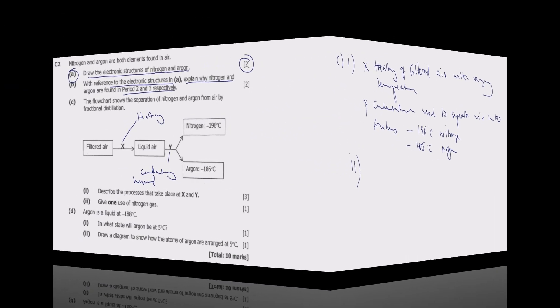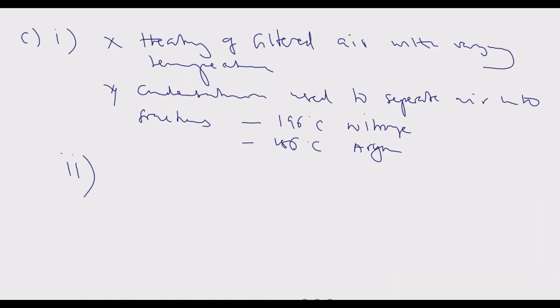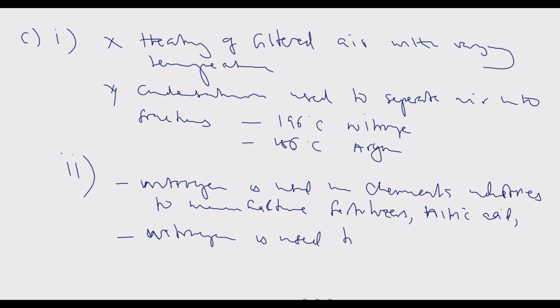Roman numeral 2 gives the usage of nitrogen gas. I'll give you a number of uses that you can choose from. Number one: nitrogen is used in the chemical industry to manufacture fertilizers, nitric acid, nylons, and explosives. Number two: nitrogen is used to make ammonia by the Haber process.